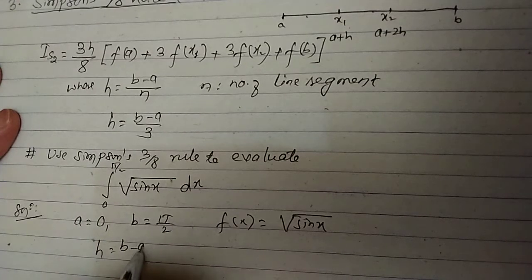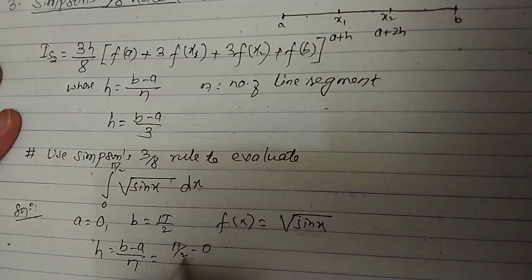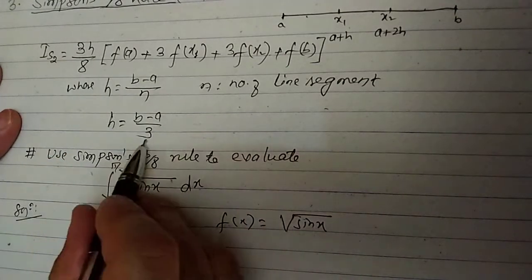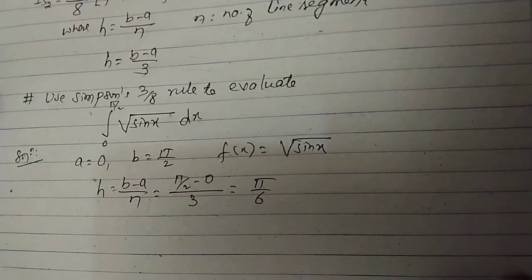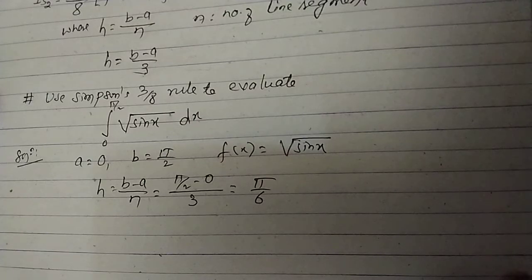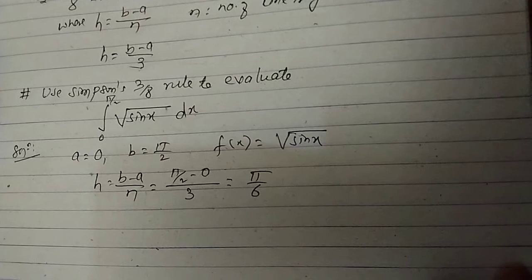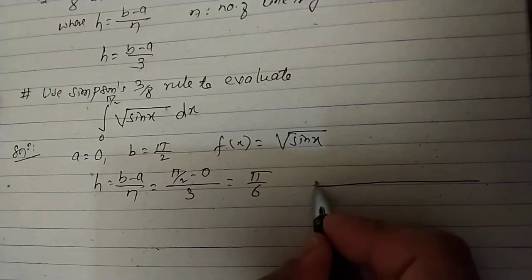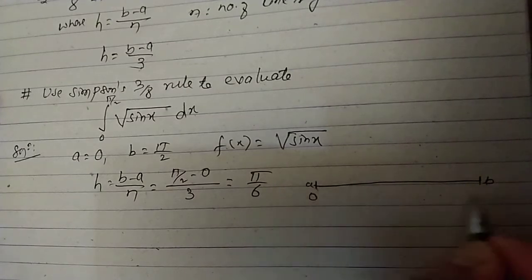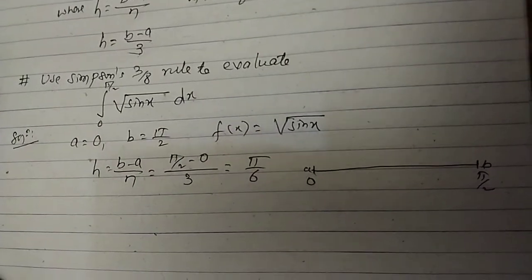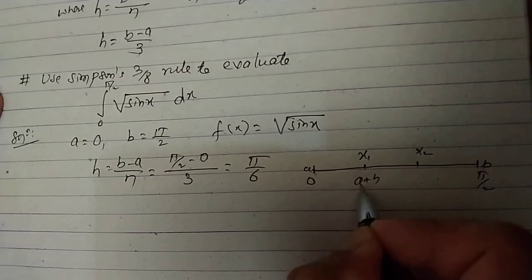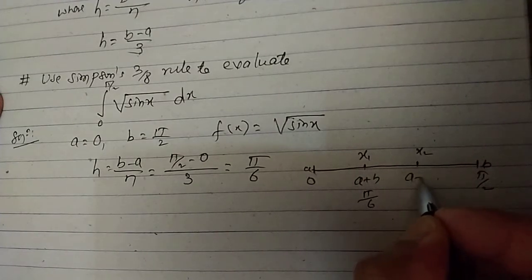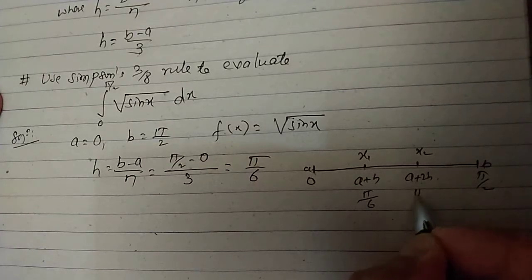The value of h is (b minus a) divided by n. With b equals π/2, a equals 0, and n equals 3 (for Simpson's 3/8 rule), h equals π/6. The intermediate points are x1 equals a plus h equals π/6, and x2 equals a plus 2h equals π/3.